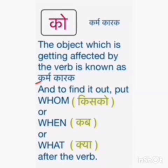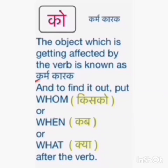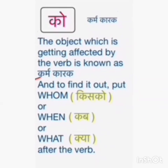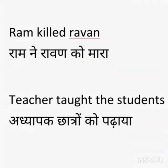So how do we find out the Karma Karak? It is the object which is getting affected by the verb in the sentence. To find out, put 'whom', 'when', or 'what' after the verb. Let us understand it with some examples now.